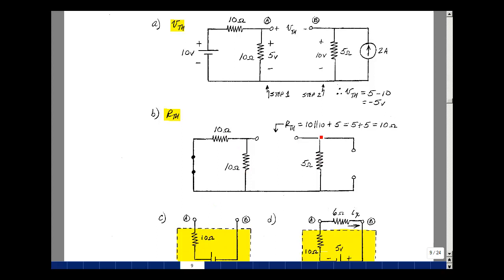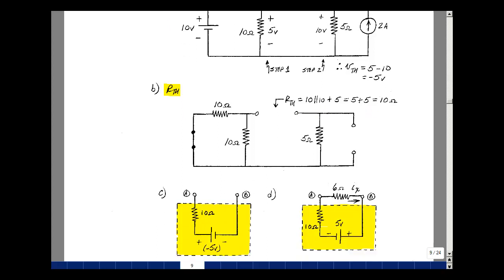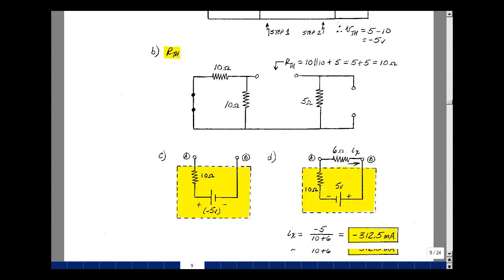10 in parallel with 10 is 5. Adding 5 to that, we get 10 ohms. Our Thevenin equivalent circuit, with respect to terminals A and B, is at the plus sign of the Thevenin voltage is near A and the minus near B. And that was equal to minus 5 volts with a Thevenin resistance of 10 ohms.